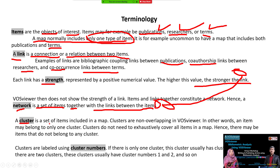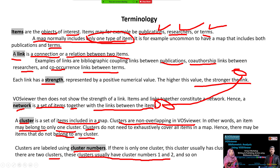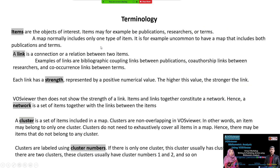Together with items and links, we have the concept of a 'cluster.' A cluster is a set of items included in a map. Clusters are non-overlapping in VOSviewer — in other words, an item may belong to only one cluster, and clusters do not need to cover all items on the map. Clusters have cluster numbers; if there is only one cluster it is usually numbered one, and if there are two, they are numbered one and two.